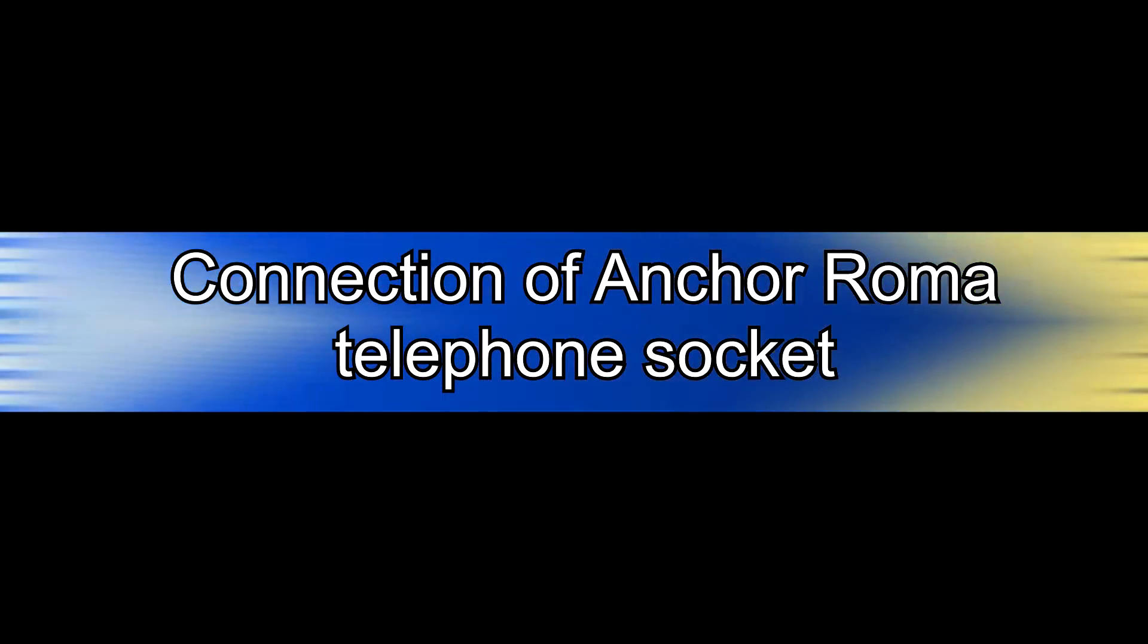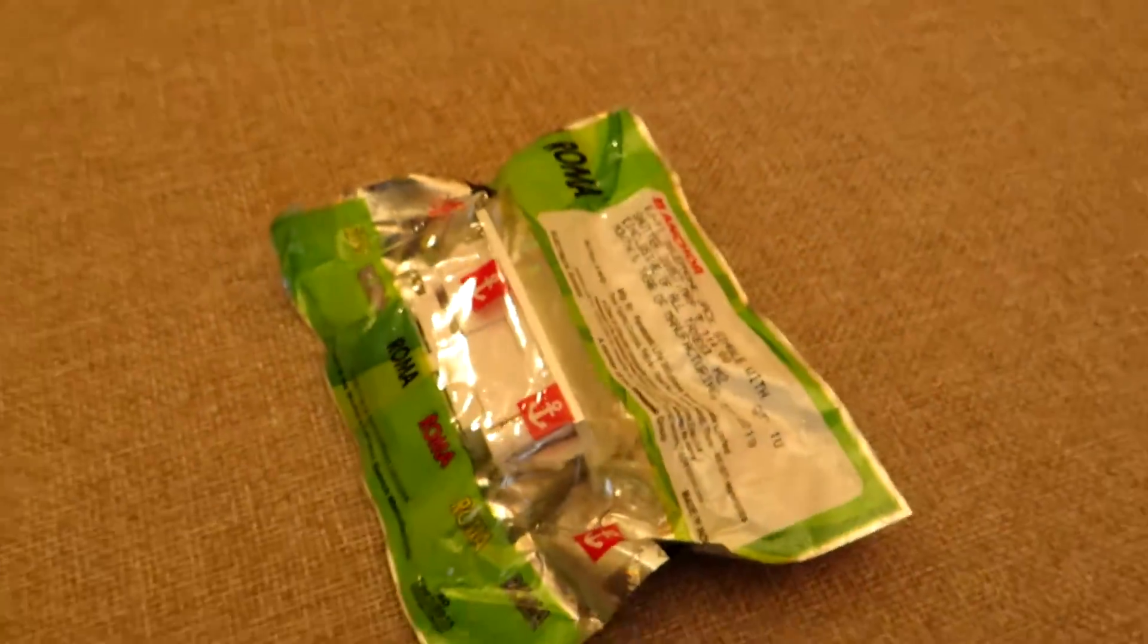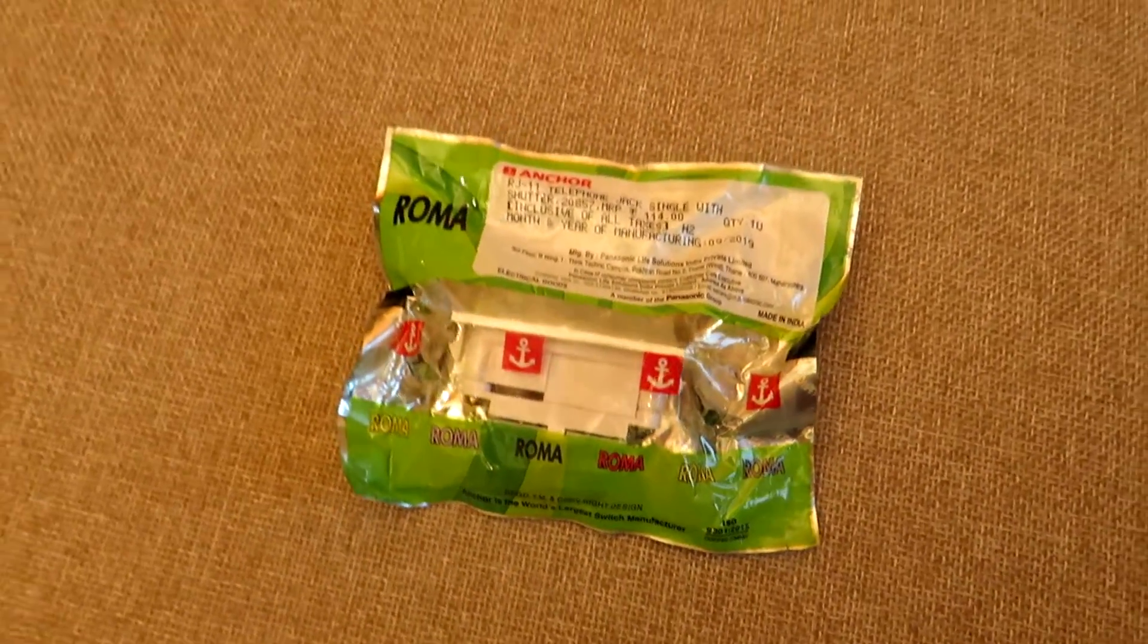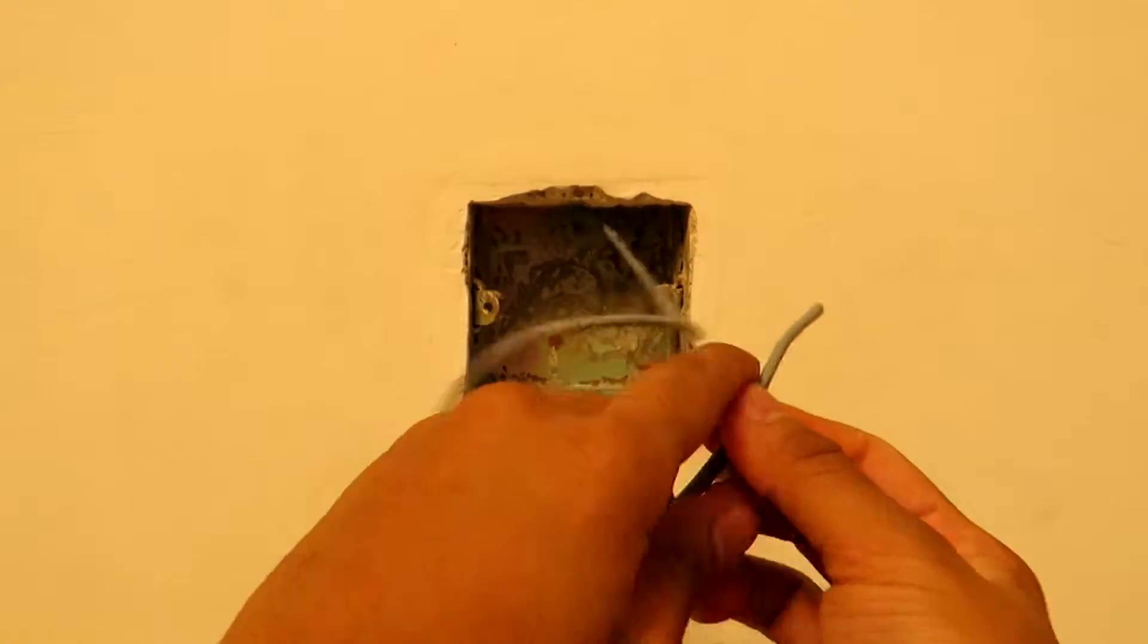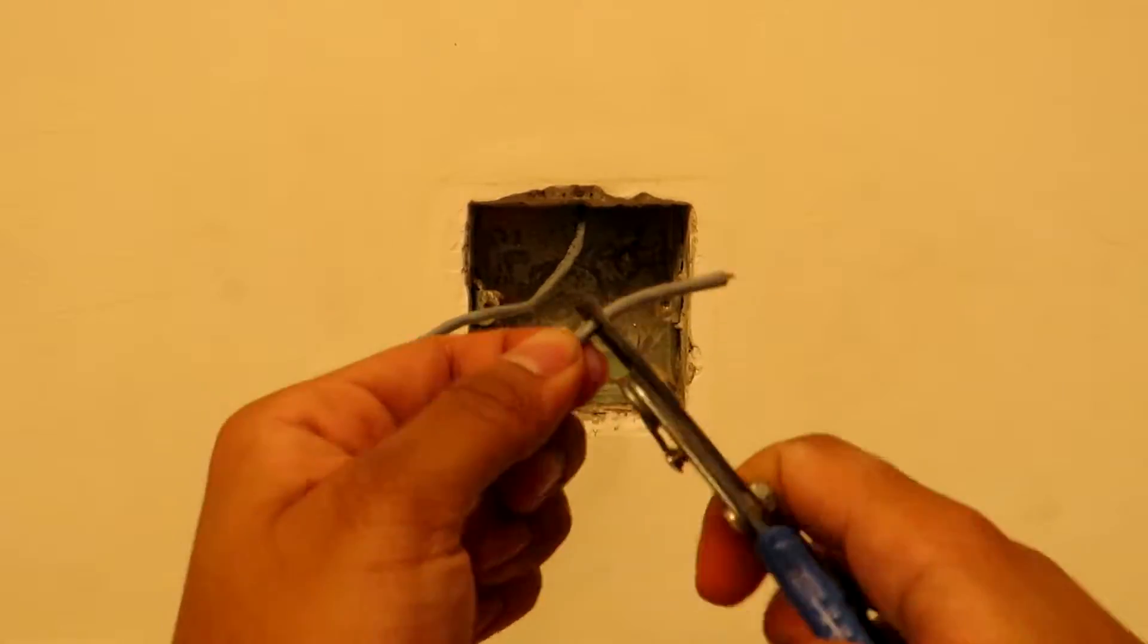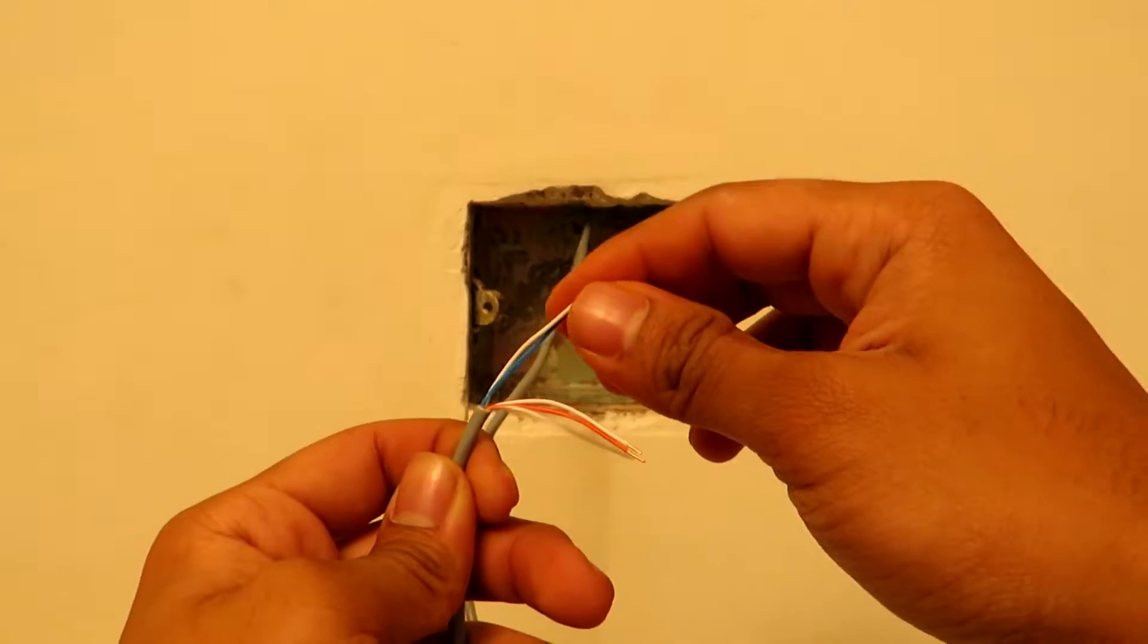Now coming to the connections, firstly I will be showing you where to connect the wires we have just found on the telephone socket terminals. Anchor Roma is the most popular brand in India, hence I will be demonstrating this first. In my personal opinion, I must say that Roma has very nicely labeled the socket terminals so it becomes easy to connect the wires. This is our wall outlet and we are going to skin the wires first so that we can connect it, and we have the active telephone pair ready.